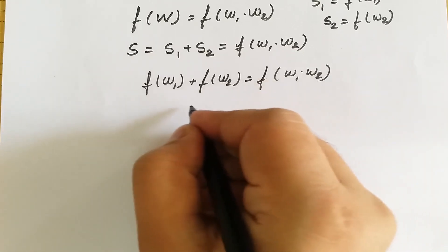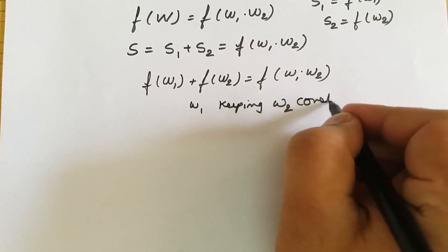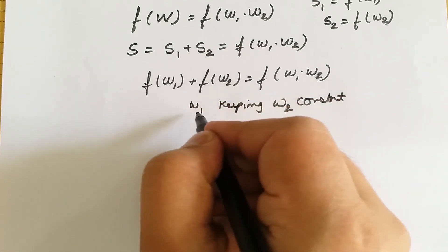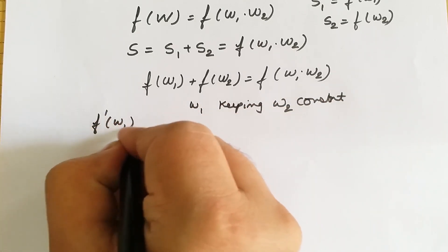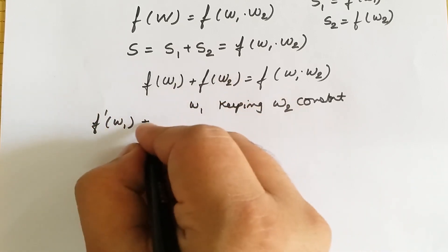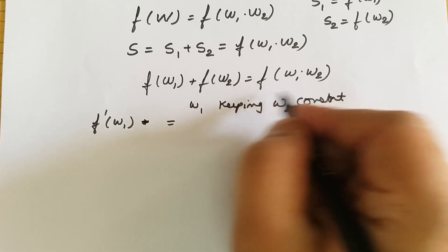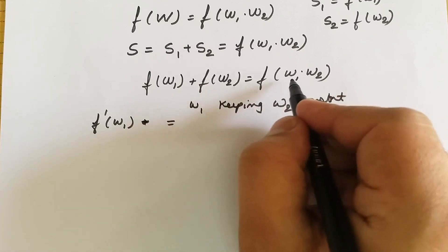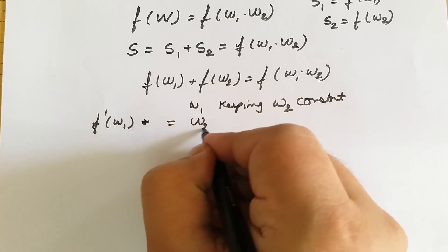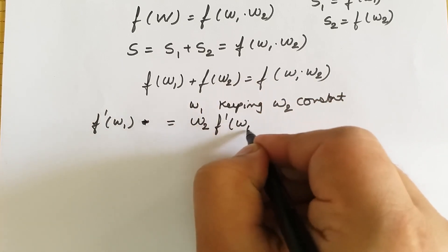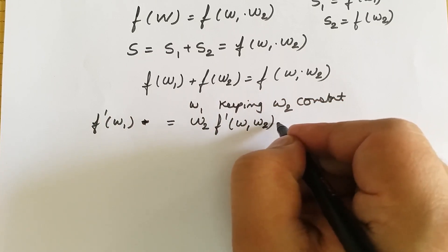We differentiate the relationship f(W1) + f(W2) = f(W1·W2) with respect to W1, keeping W2 constant. The left side gives f'(W1), and the right side is differentiated by the product rule. Keeping W1 constant makes the first term zero, and keeping W2 constant gives us f'(W1)·W2 on the right side.